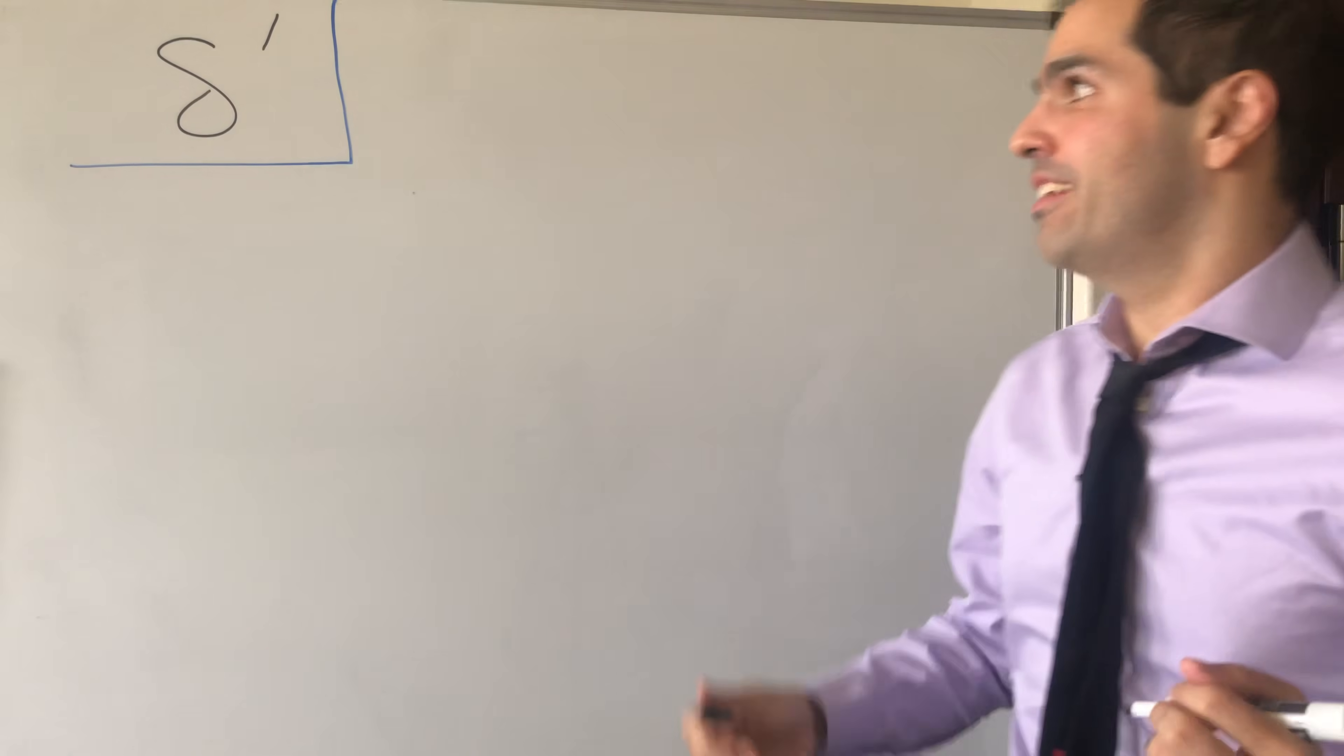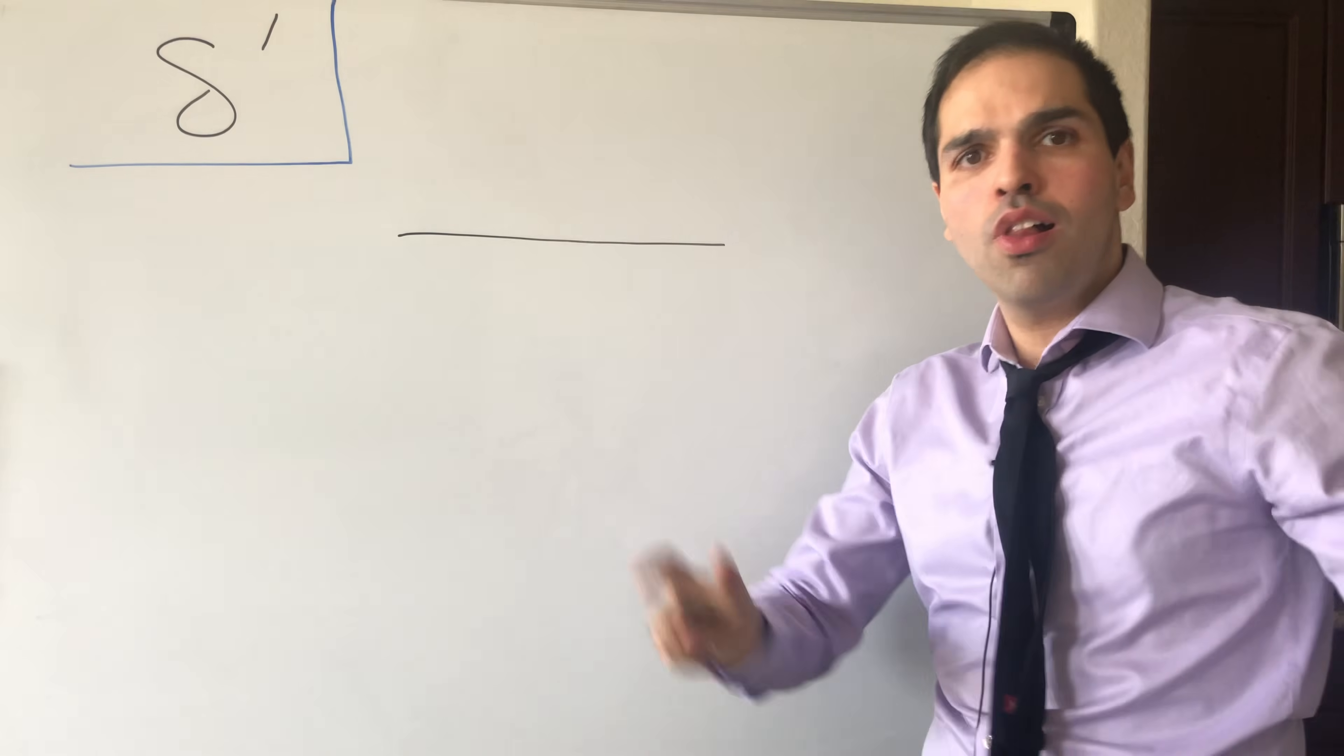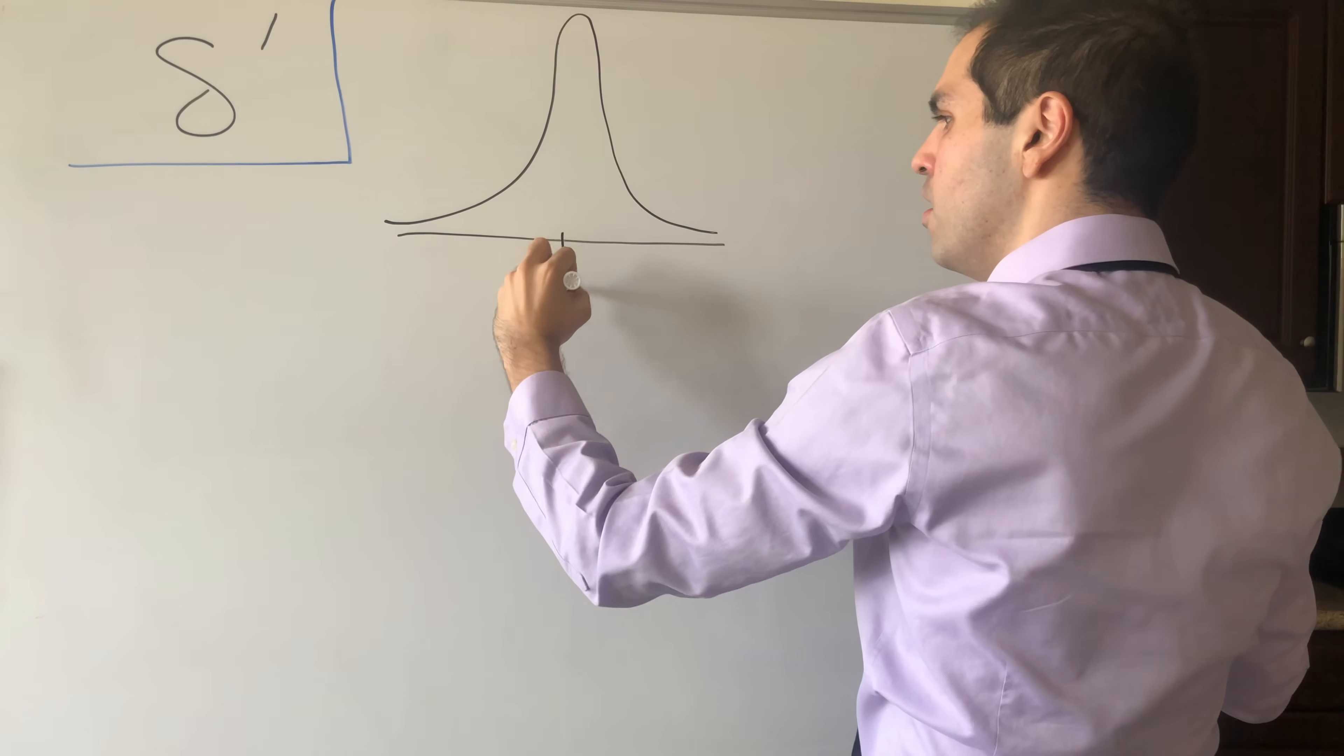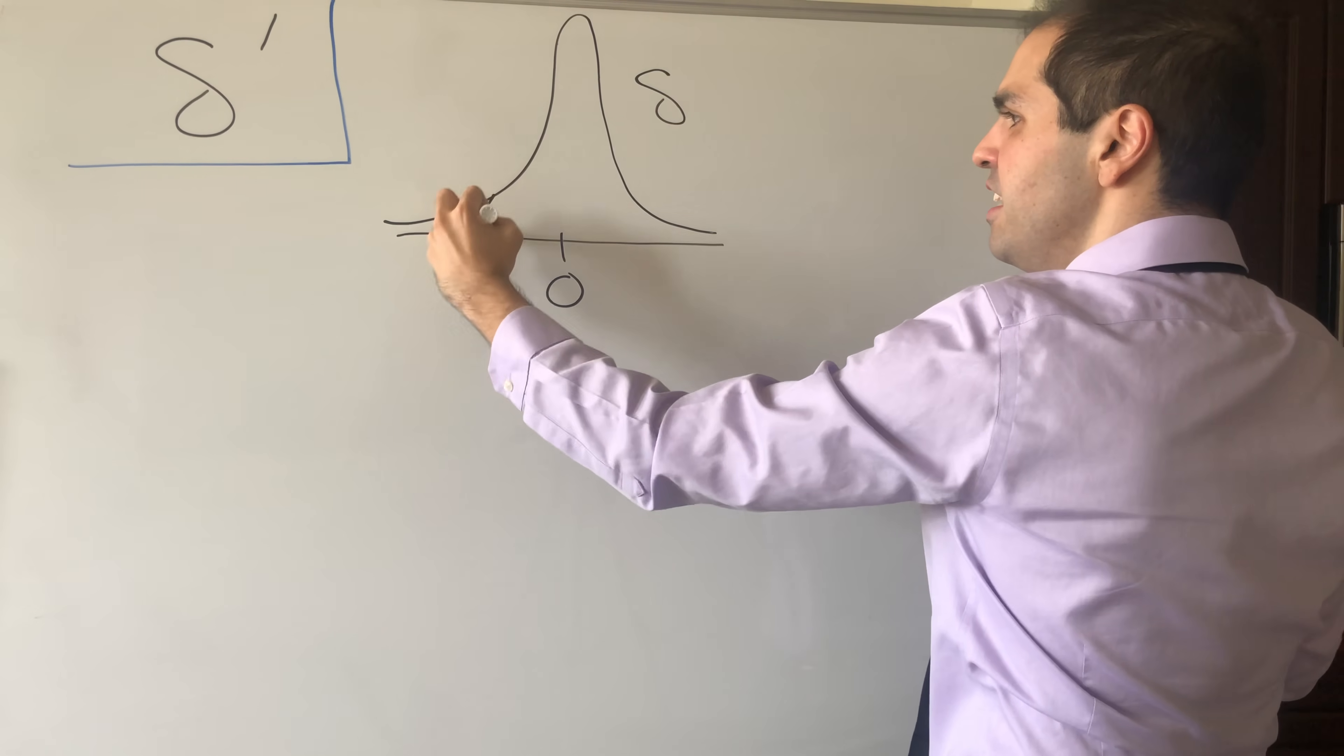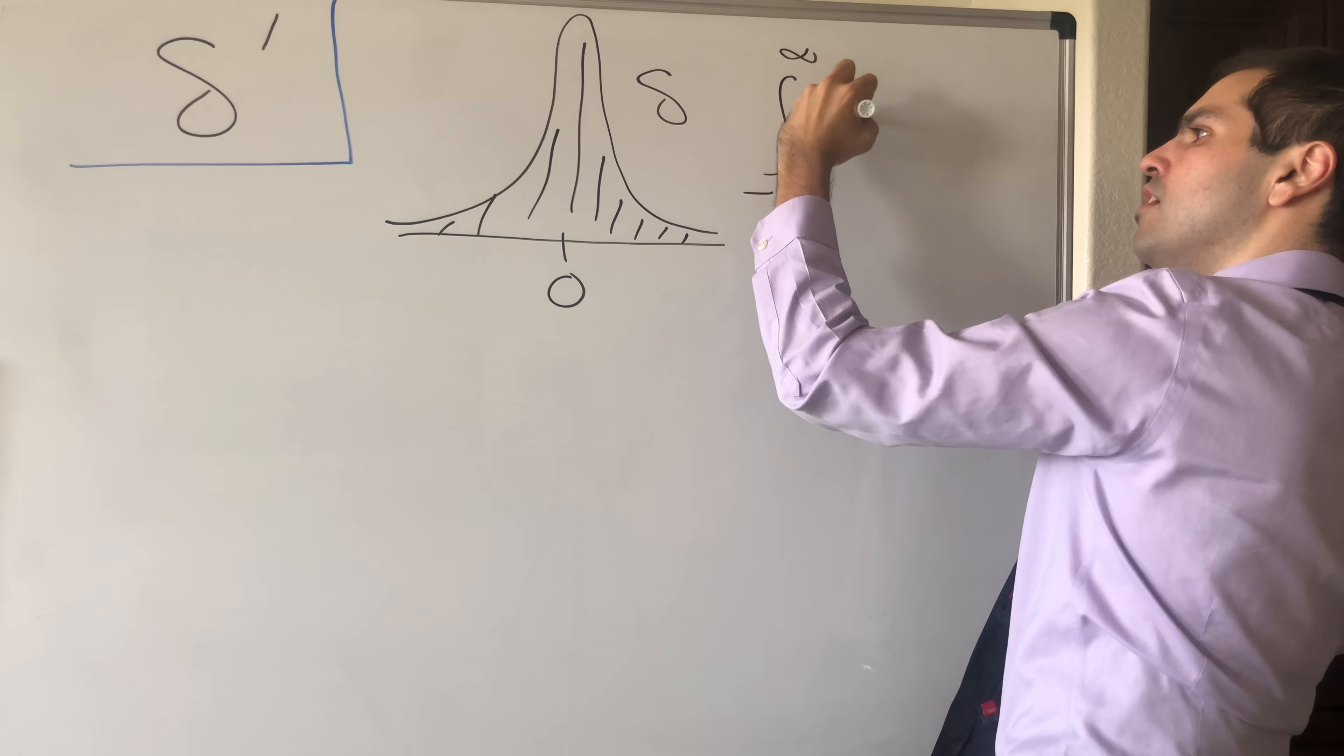So first of all, let me remind you what the Dirac delta is. Intuitively, it's this functional, or this function in quotation marks, that is infinity at zero and zero everywhere else, but with the property that if you take the integral of the Dirac delta from minus infinity to infinity, then you get one.